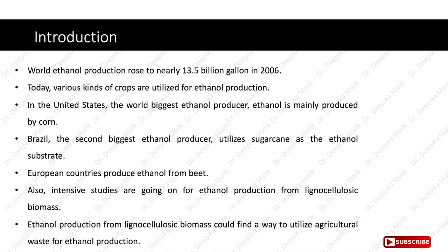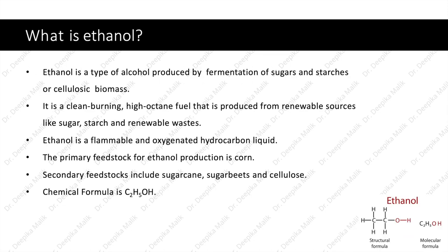Ethanol production from lignocellulosic biomass could find a way to utilize agricultural waste for ethanol production. Ethanol is a type of alcohol produced by fermentation of sugars and starches or cellulosic biomass. It is a clean-burning, high-octane fuel that is produced from renewable sources like sugar, starch and renewable wastes.